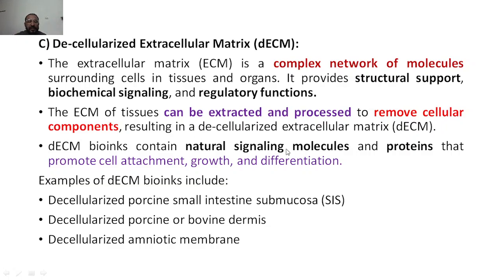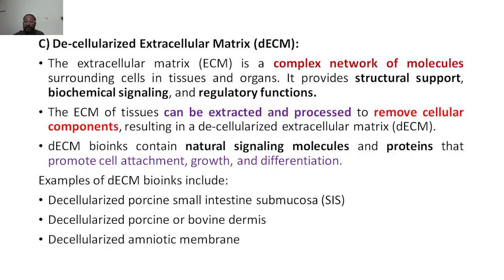DECM bioinks contain natural signaling molecules and proteins that promote cell attachment, growth, and differentiation. These molecules can be used for natural signaling processes, and the proteins promote proper cell attachment, growth, and differentiation so that organs can be formed effectively.